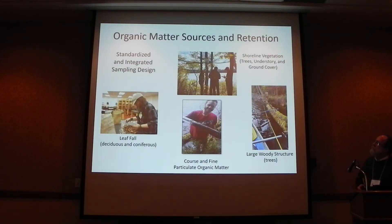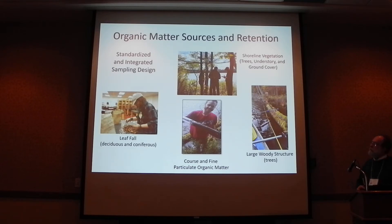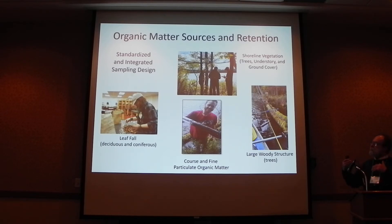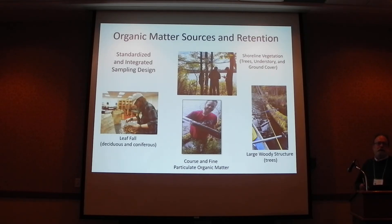For organic matter sources, we designed the project so that sampling would be standardized among different impact levels and integrated. Shoreline vegetation, trees, understory, and ground cover were sampled along 60-meter sections. Within those same sections, students looked at large woody structure in the lake using standardized measurements. One student looked at leaf fall — how much was falling on the shoreline versus available on the lake. Another student took core samples in the same areas to look at coarse and fine particulate organic matter.